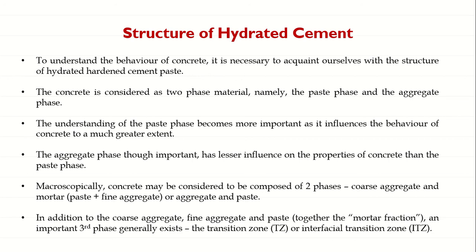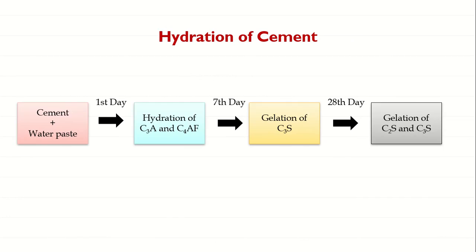One important term to remember is the transition zone, or interfacial transition zone (ITZ). This is a zone that exists between the coarse aggregate and the cement paste, observable only under a microscope. It indicates how well the cement paste is binding the aggregate. A good transition zone means good strength; if the binding is not proper between aggregate and cement paste, the transition zone will be weaker and micro cracks may develop.